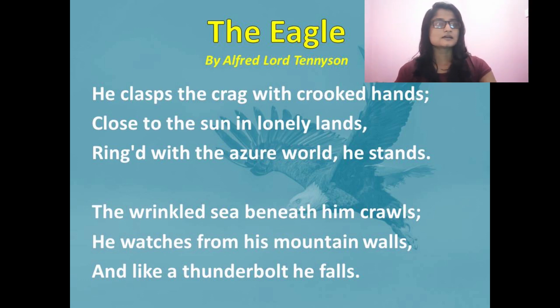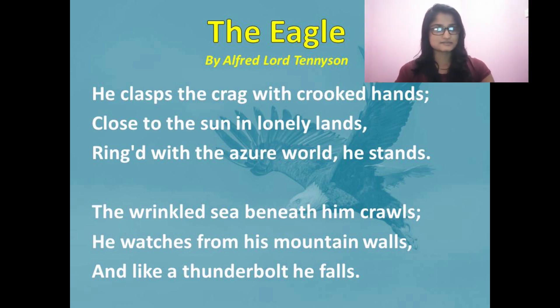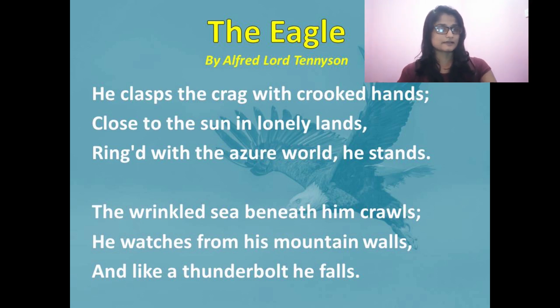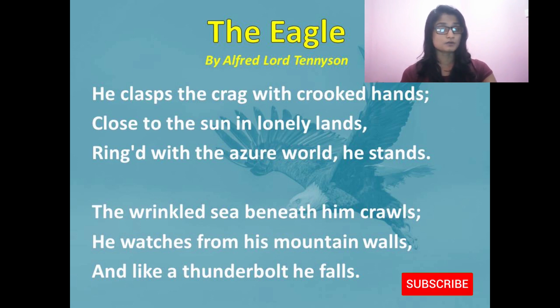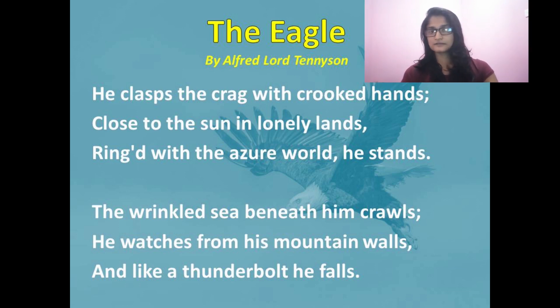Now let's move to the poem and see each stanza separately. This poem has two stanzas. It's a very short poem but it tells a lot of things. Let's first read the two stanzas: 'He clasps the crag with crooked hands, close to the sun in lonely lands, ringed with the azure world, he stands. The wrinkled sea beneath him crawls, he watches from his mountain walls, and like a thunderbolt he falls.' That's the poem.